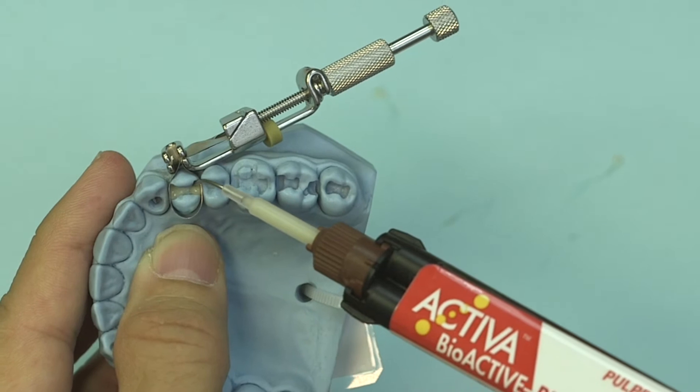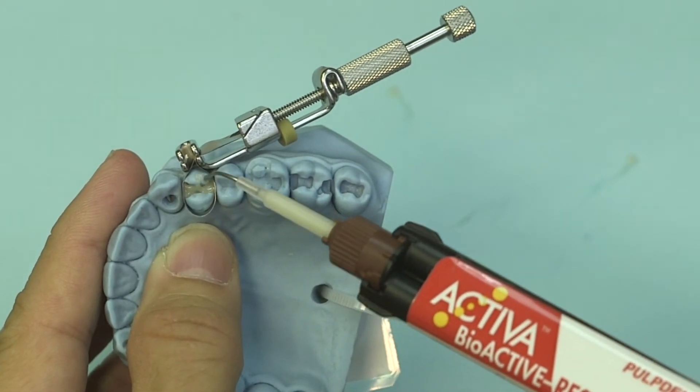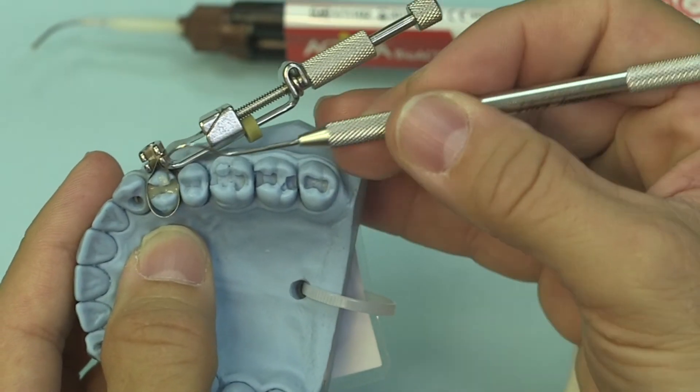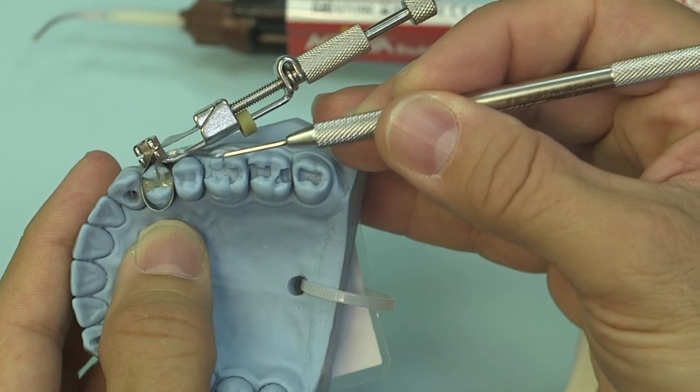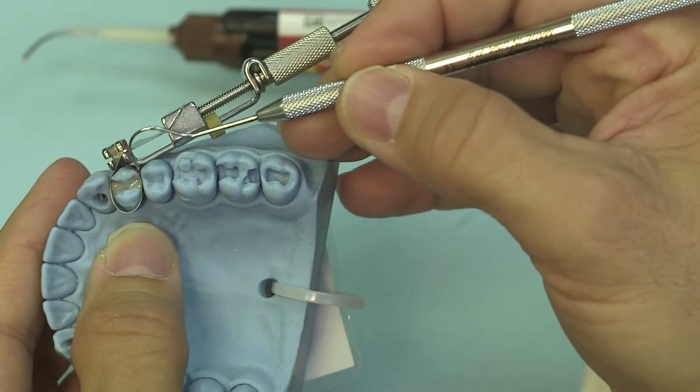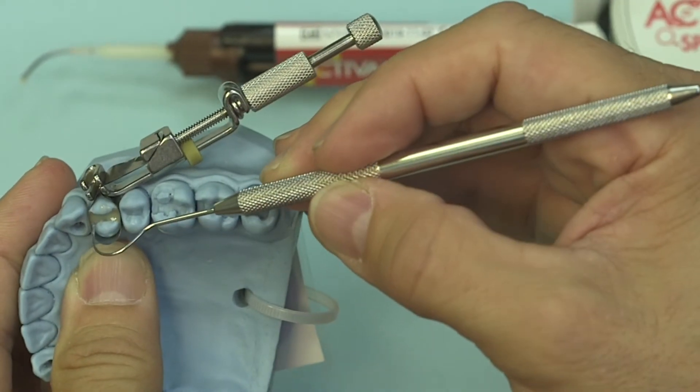Again, bringing the cannula slightly out and then bringing it over to the buccal surface area, just kind of dragging the material out that way. Now you can get rid of the excess if you would like to, and then I just like to make sure that I have everything in place.